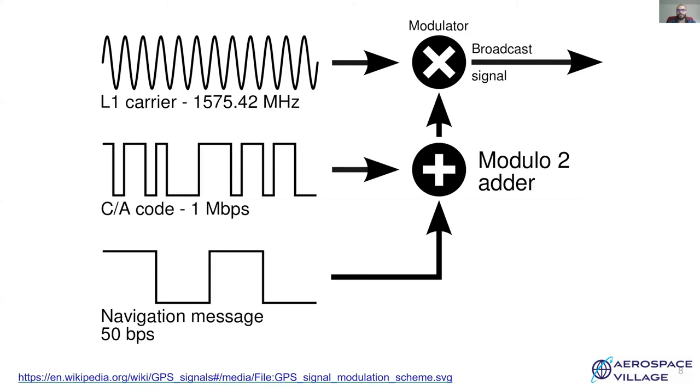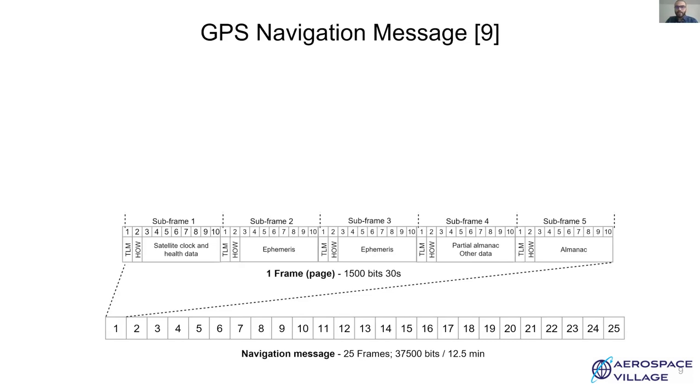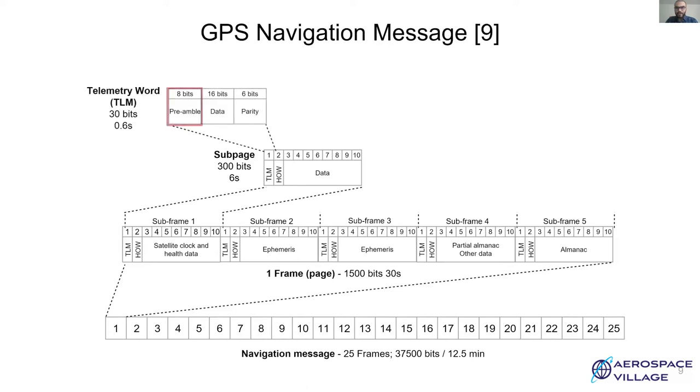The transmitter first generates a baseband signal sampled at 50 BPS, which is combined with the CA code sampled at 1 Mbps. This spread message is then modulated on the carrier before transmitting. Each navigation message has 25 frames. It takes 12.5 minutes for transmission of entire message. A frame has 1500 bits and takes about 30 seconds. It is divided into 5 subframes each with 300 bits. Start of a subframe is marked by a telemetry word which has an 8-bit preamble which marks the beginning of the subframe and handover word each of 30 bits. Time of week marks the week number since the epoch and is used for timing information.